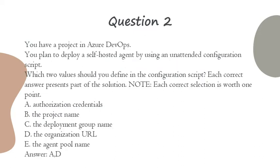Question 2. You have a project in Azure DevOps. You plan to deploy a self-hosted agent by using an unattended configuration script. Which two values should you define in the configuration script? Each correct answer presents part of the solution.